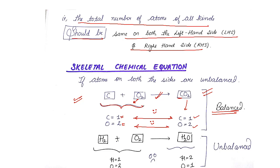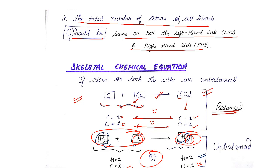Now consider H₂ + O₂ → H₂O. Hydrogen atoms: two on each side — balanced. But oxygen atoms on the left-hand side: two; on the right-hand side: just one. You started with two atoms of oxygen but ended up with only one — that's wrong. Such equations are known as unbalanced chemical equations. All these categories of equations — balanced or unbalanced — are classified as skeletal chemical equations, and we need to do something to convert a skeletal equation into a perfect balanced equation.